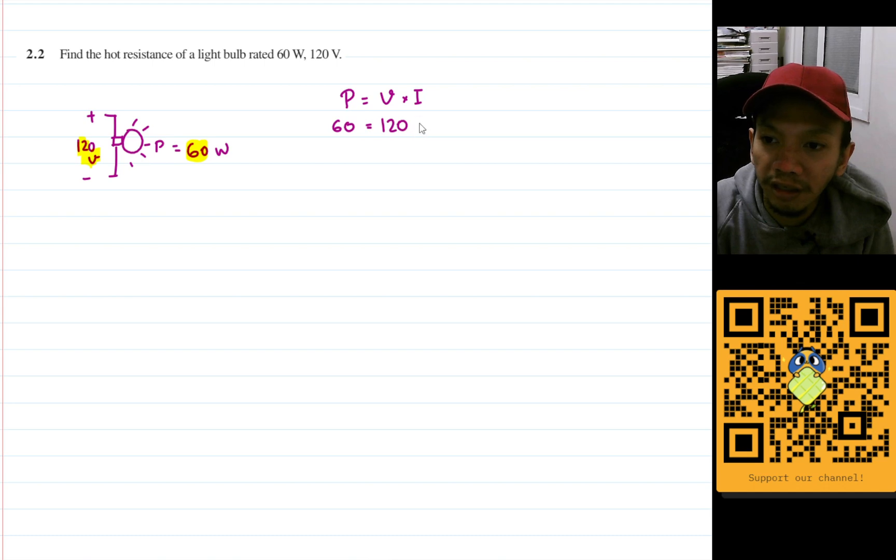And I is the one thing that we need to find out. So we will have I is 60 divided by 120, and so that will be I is equal to 0.5 amperes.